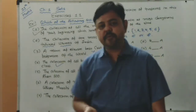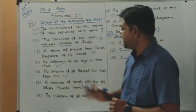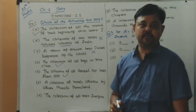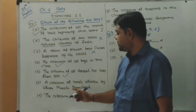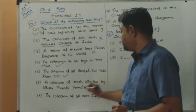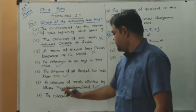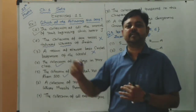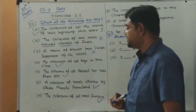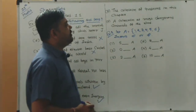The collection of all natural numbers less than 100: whoever writes this, only natural numbers 1 to 99 will appear — it is specific. That is a set. The collection of novels written by Munshi Premchand: the collection is only of Munshi Premchand's novels, no other novels are included — that is a set. The collection of all even integers is also specific — that is a set.